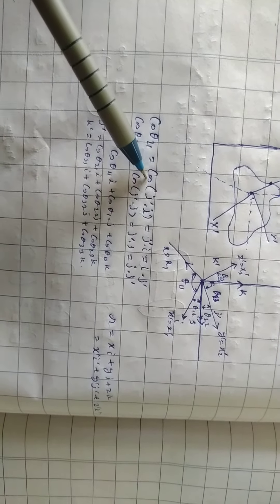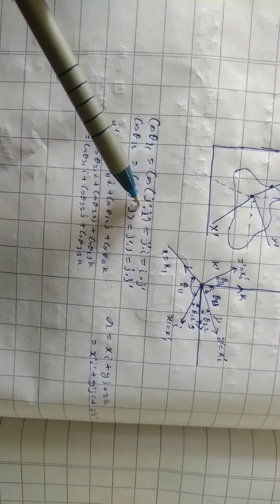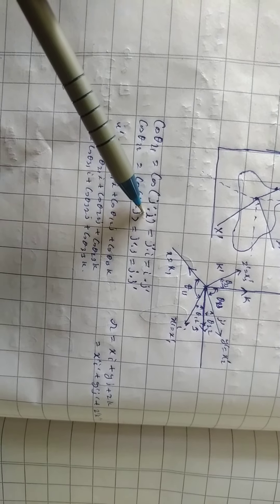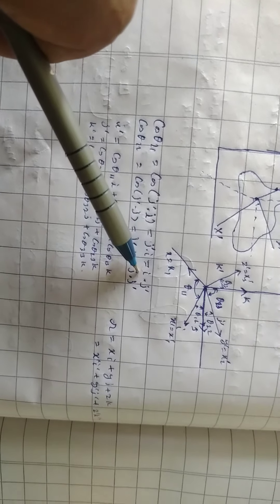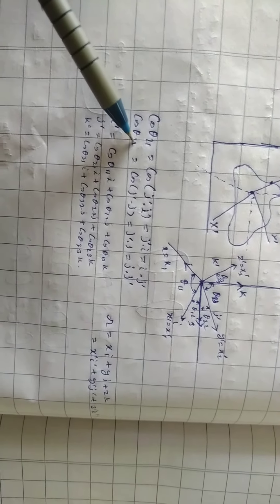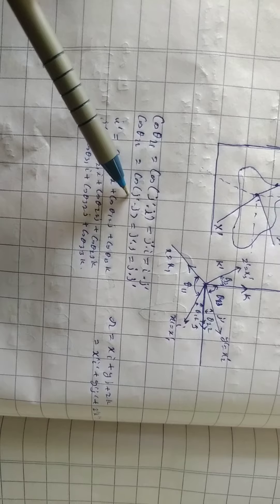Cos theta 21 equals j dash dot i dash, which equals i dot j dash. Cos theta 22 equals j dash dot j dash.